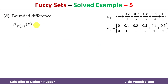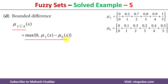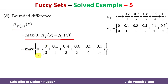Coming to the last one, known as bounded difference between two fuzzy sets, denoted with its symbol. It is calculated using this formula: the maximum of 0 or the difference between the membership value of x in T and R. We take the difference: 0 − 0 = 0; 0.2 − 0.1 = 0.1; 0.7 − 0.3 = 0.4, and so on.